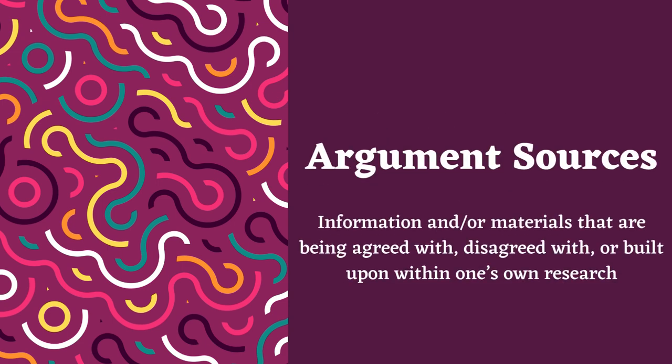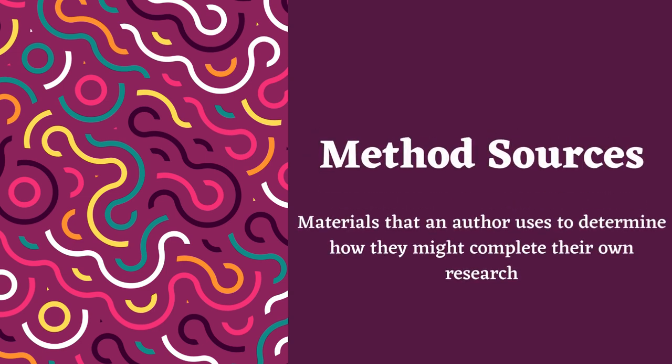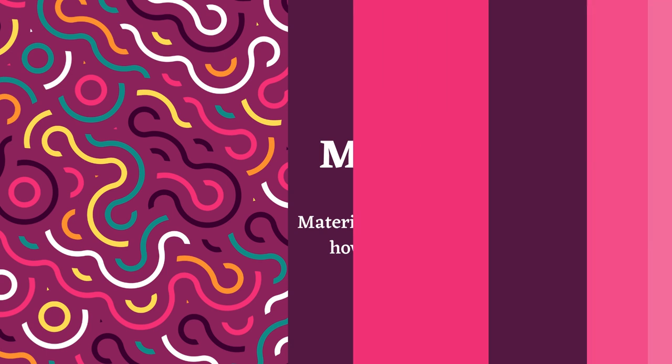An argument source is information and/or materials that are being agreed with, disagreed with, or built upon within one's own research. This helps situate one's own research within the wider community. Method sources are materials that an author uses to determine how they might complete their own research. This can be a rhetorical lens to analyze a work of literature under, a particular method of formatting surveys in their dispersal, or a mathematical proof used to solve a problem.